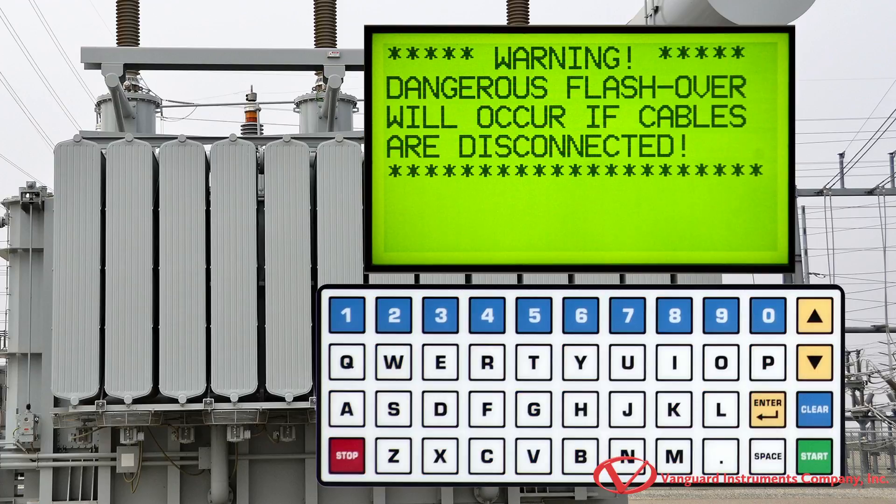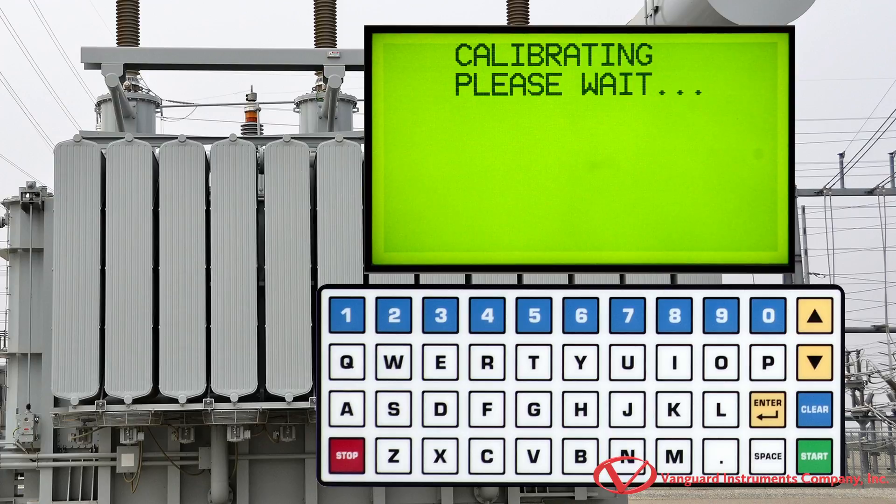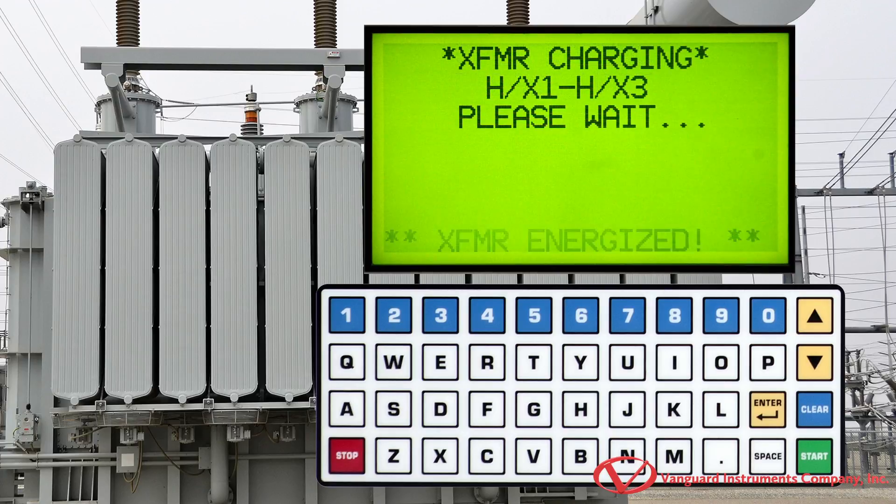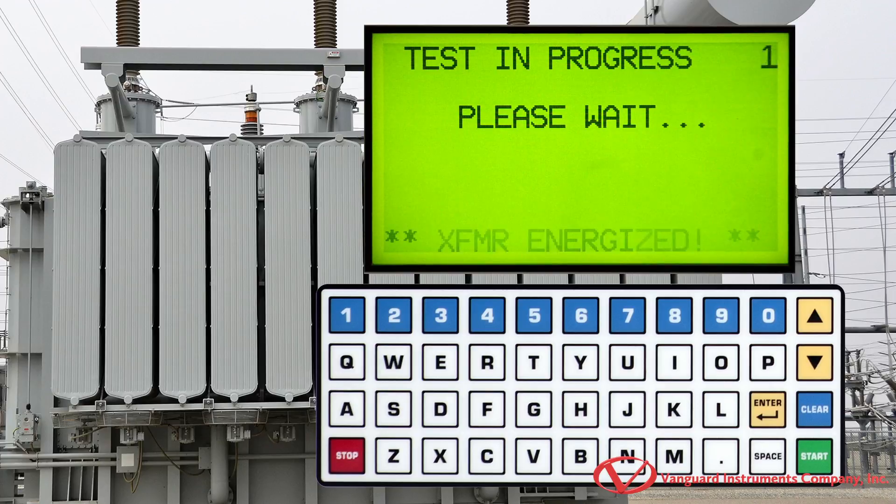Press any key to continue. Now press the start key to start the test. The TRM will perform some internal calibration and then energize the transformer. The TRM determines when the resistance reading is stable and displays the resistance value on the LCD screen.